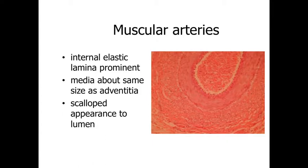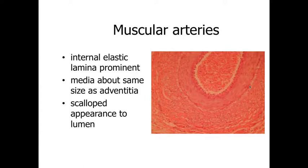Blood is then distributed rapidly through muscular arteries — the named anatomical arteries and arteries supplying different regions of organs. Muscular arteries have a tunica intima, tunica media, and tunica adventitia. Elastic fibers are still present, so you may see an internal elastic lamina at the boundary between the tunica intima and tunica media, or an external elastic lamina between the tunica media and adventitia. Muscular arteries often show a scalloped appearance of the lumen in histological specimens, and the tunica media is about the same size or slightly thicker than the tunica adventitia.